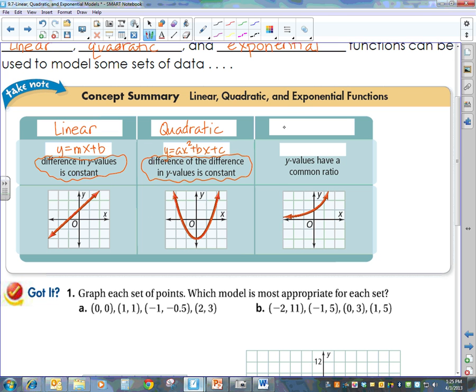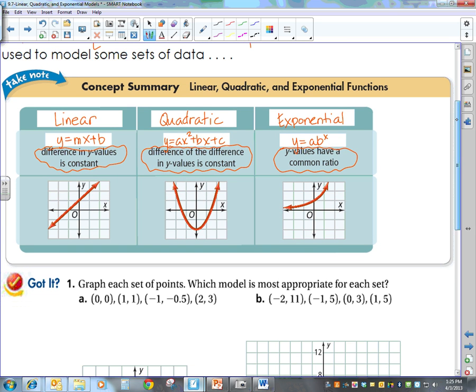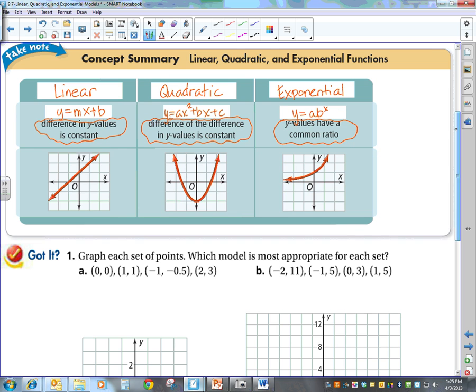And the last picture that we have, graph that we have, would be that of an exponential function. An exponential function, and the general equation we're going to work with is y equals a times b to the x. An exponential function is where your variable is in the exponent. And when we have an exponential function, those y values won't have a common difference, but they're actually going to have a common ratio.